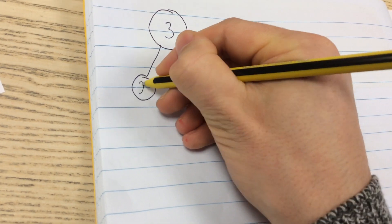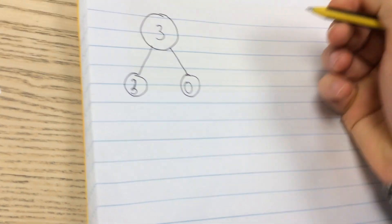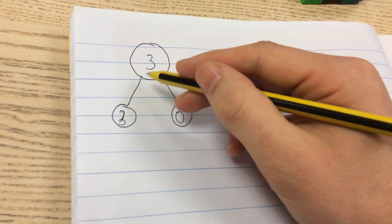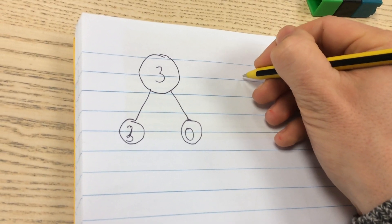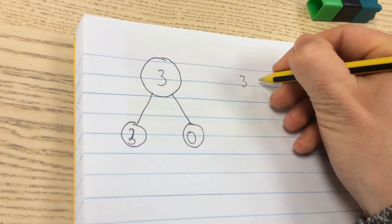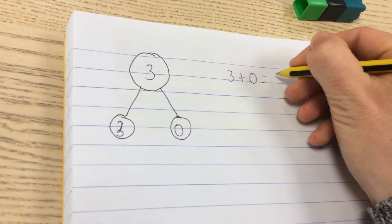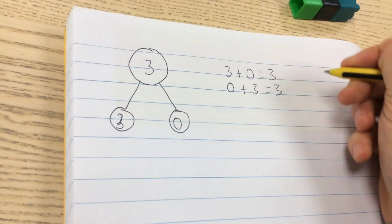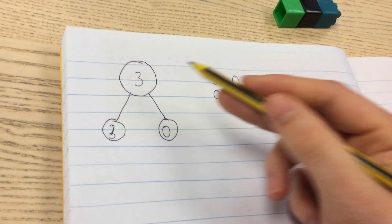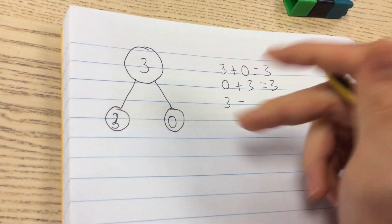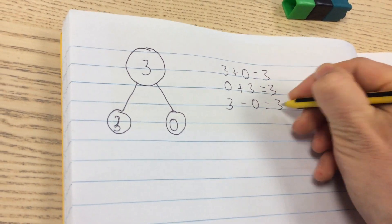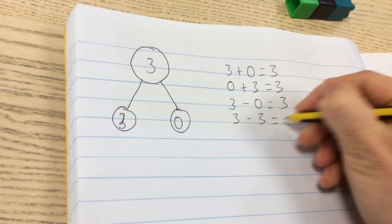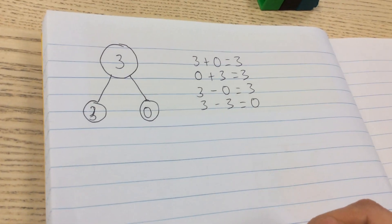We've got maybe 3 and 0. Now you can do addition and subtraction number sentences with these numbers. If we start with addition, we know that 3 add 0 equals 3 and also we know that 0 add 3 equals 3. We also know that 3 take away 0 equals 3 and 3 take away 3 equals 0.